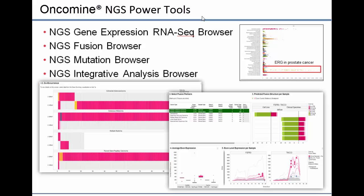The newest suite of Oncomine tools are the NGS Power Tools. Developed with a biologist and bioinformaticist in mind, the NGS Power Tools enable the user to explore RNA-seq expression, fusion, and mutation profiles across thousands of cancer samples and cell lines. More advanced analysis can be performed using the NGS Integrative Analysis Browser, which allows the user to examine the associations between the sample phenotypic and genotypic information.